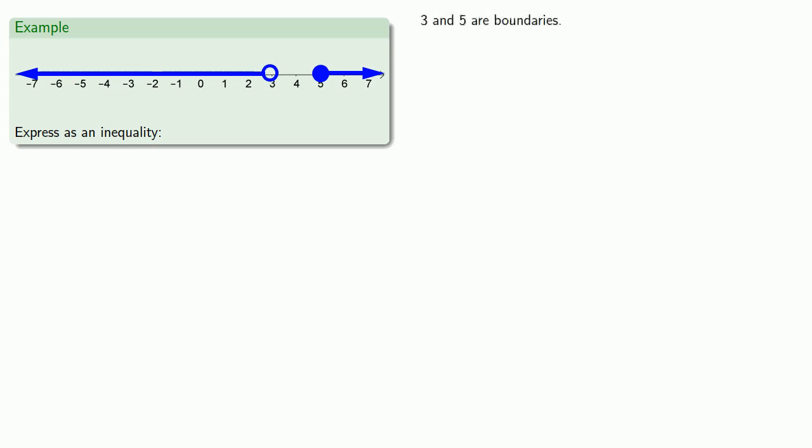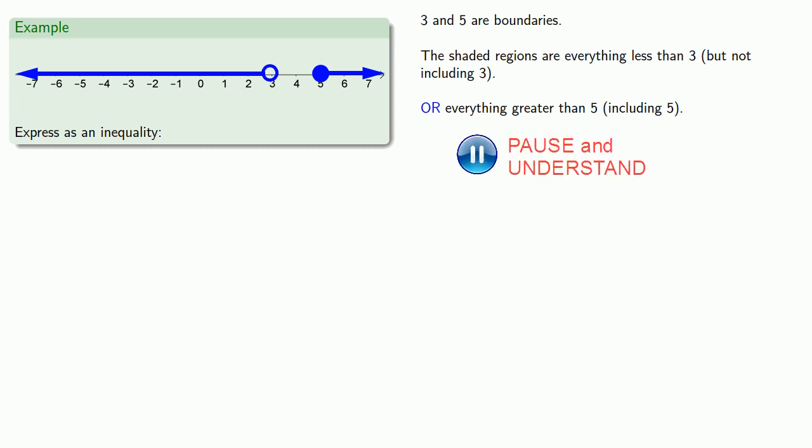So here we see that 3 and 5 are boundaries. The shaded regions are everything less than 3, but not including 3. Or everything greater than 5, including 5. So, the graph shows the inequality x less than 3, or x greater than or equal to 5.